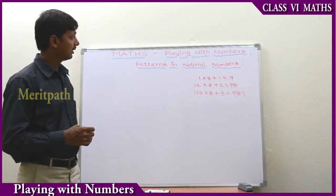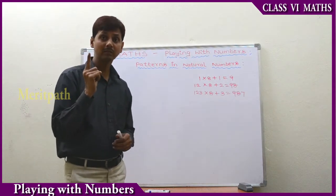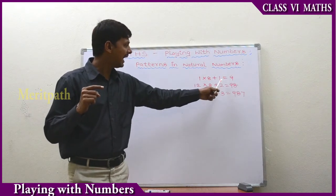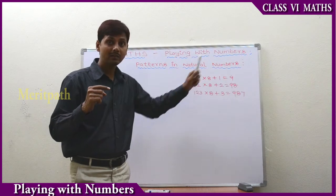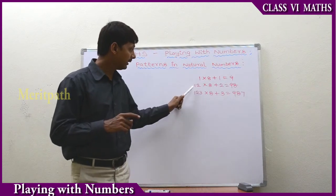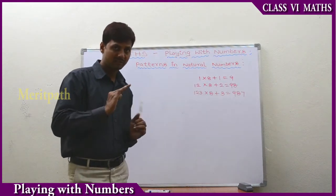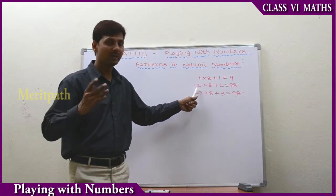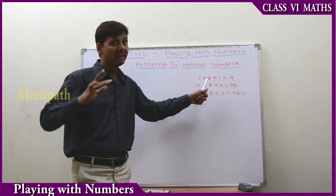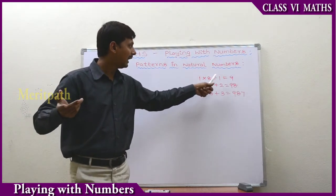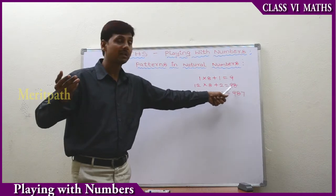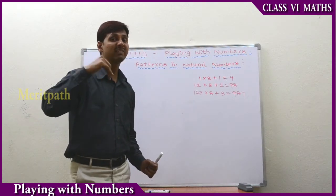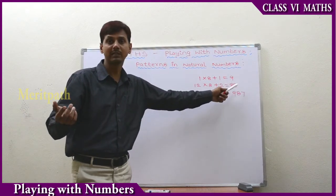First we have taken a natural number 1, then we multiplied with 8 and added 1 to it, and we got 9 as a result. The next one: 1, 2 — that is 12 — multiplied with the same number 8, then we add the next natural number 2, and we got 98. So here 9 we got, and the preceding number of 9 is 8, so we got 8 here.